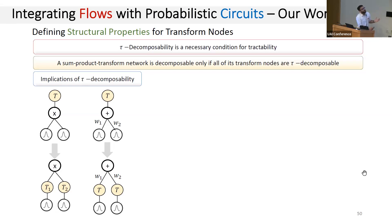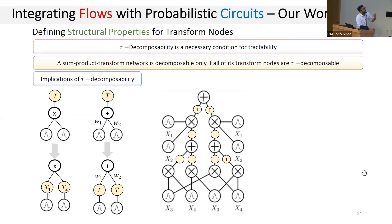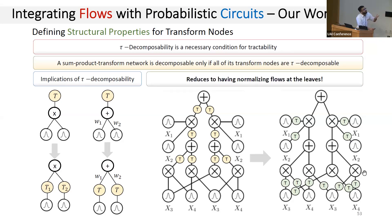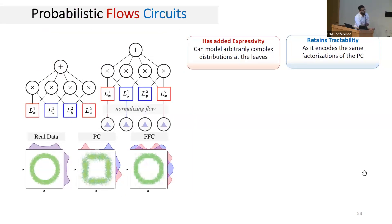We can extend this analysis to show that in the presence of tau-decomposability, transform nodes placed arbitrarily within a PC can be reduced — pushed down from internal nodes to the leaves. What this means is that a PC with arbitrarily placed tau-decomposable transform nodes reduces to having a new type of transform node defined only over the leaf distributions. These new leaf transform nodes correspond to compositions of all transformations encountered on the path from that leaf to the root in the original PC — in other words, normalizing flows defined just at the leaves.